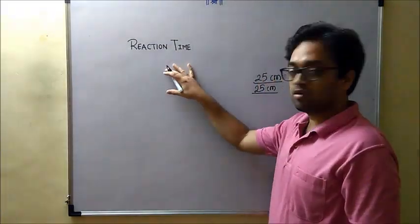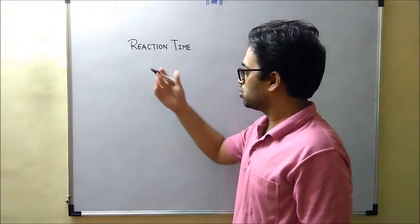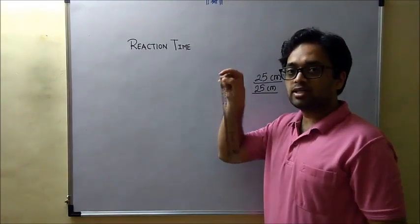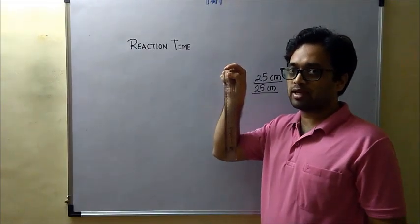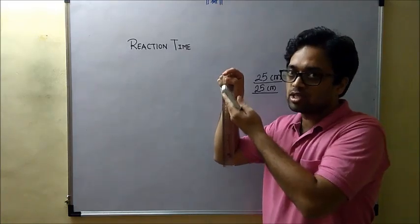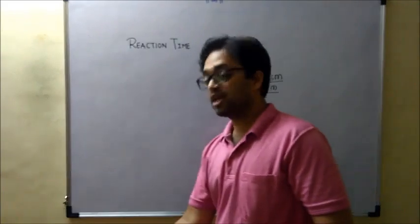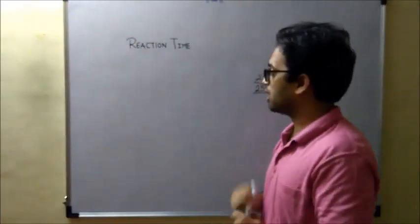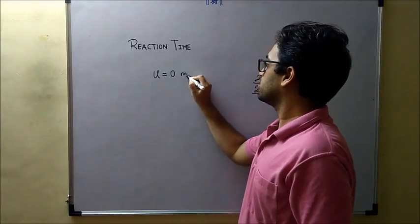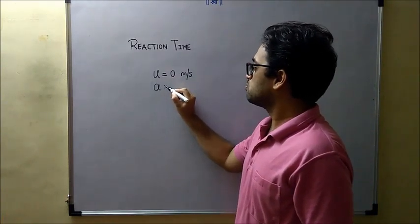Now using this let me formulate the process of calculating reaction time. So you know that when I was holding the scale in my hand it had a speed of 0 meters per second because I was holding it. When I just release it, it starts with that 0 meters per second speed. Now consider this scale as an object that is traveling downward under gravity. So what is the initial velocity for that? It is 0 meters per second, u = 0 m/s.